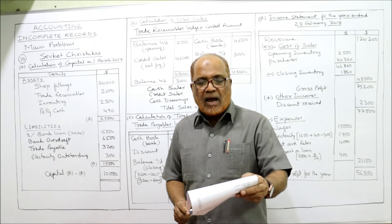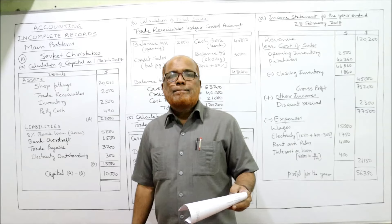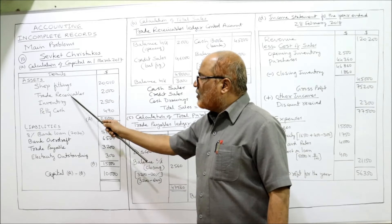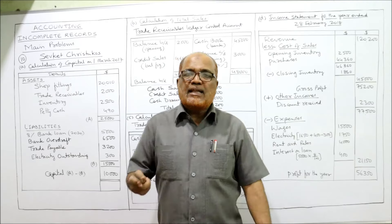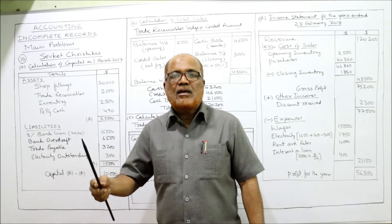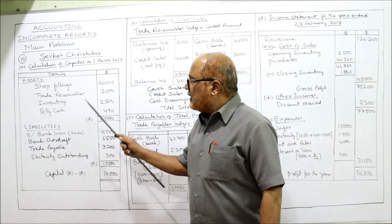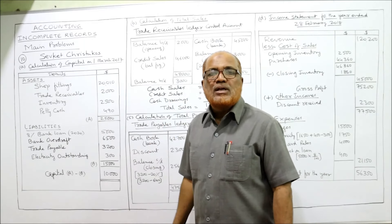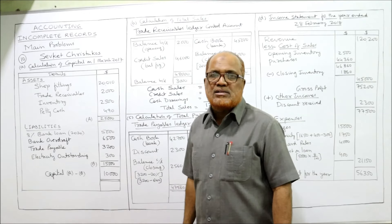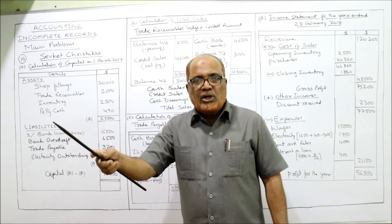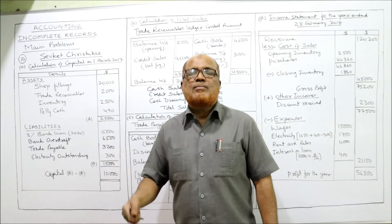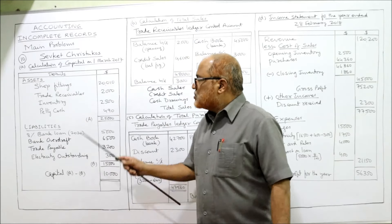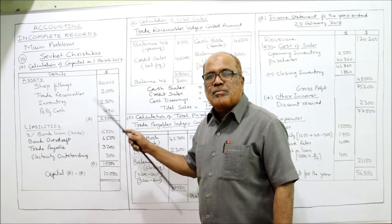The amount owed by credit customers had increased by 50 percent. Trade receivable at the beginning of the year was $2,000. At the end of the year it had increased by 50 percent, so 50% of $2,000 is $1,000. Therefore closing trade receivable = $2,000 + $1,000 = $3,000.